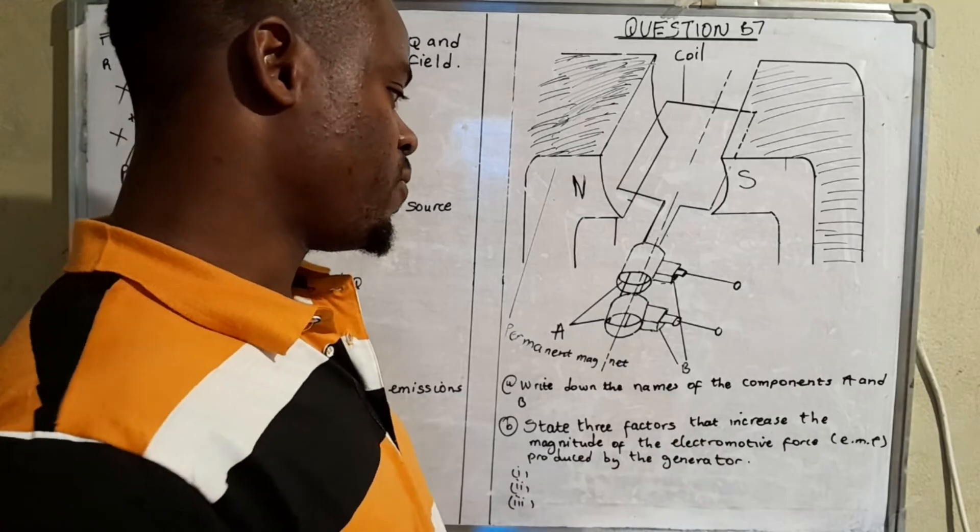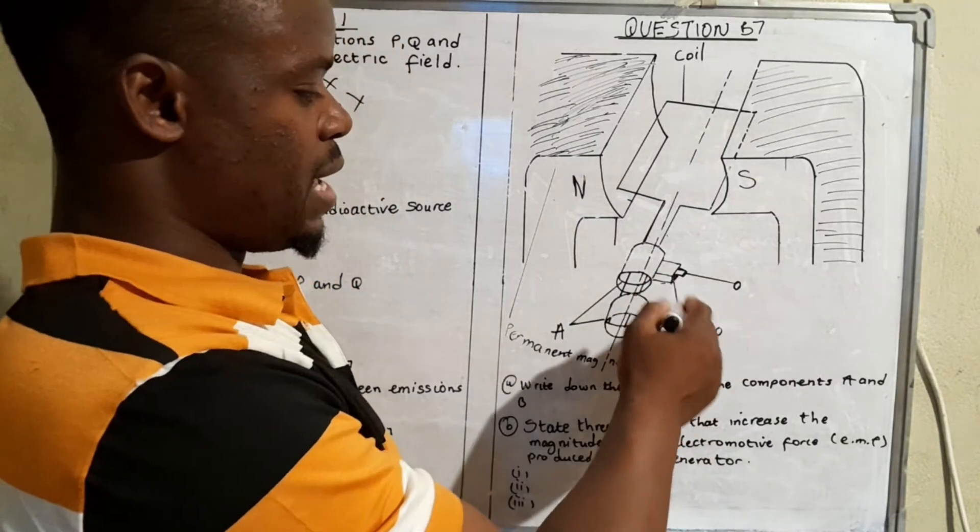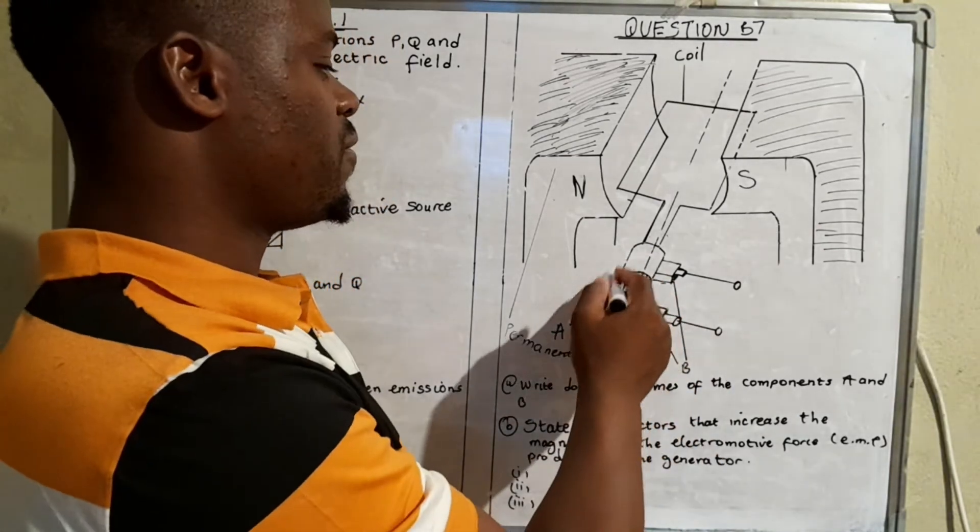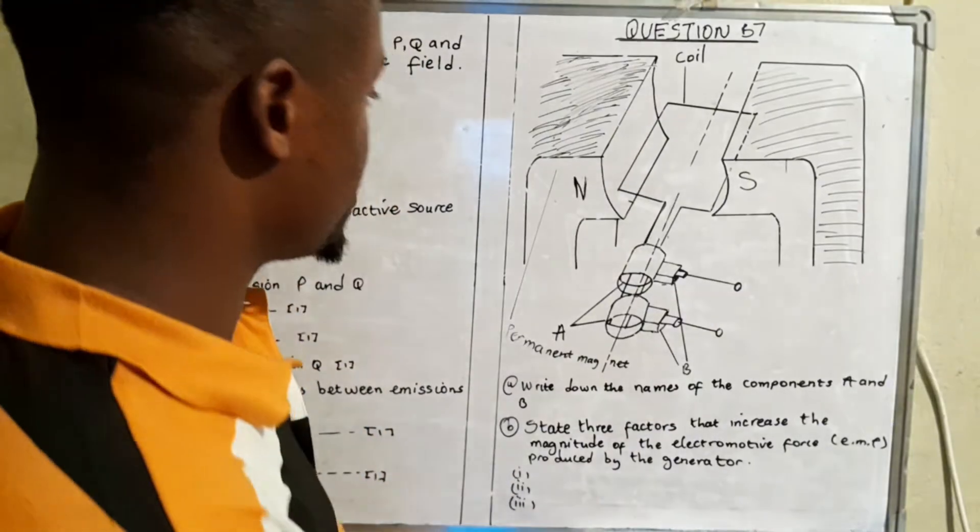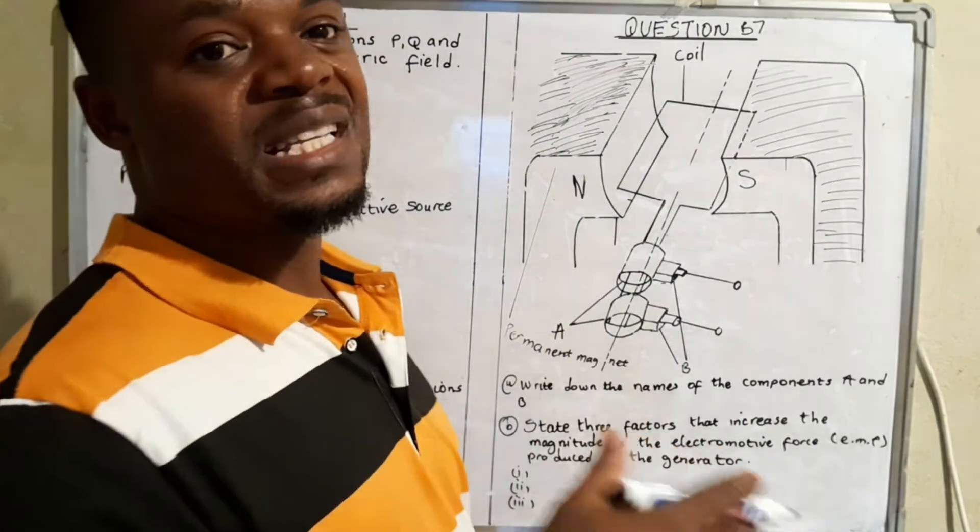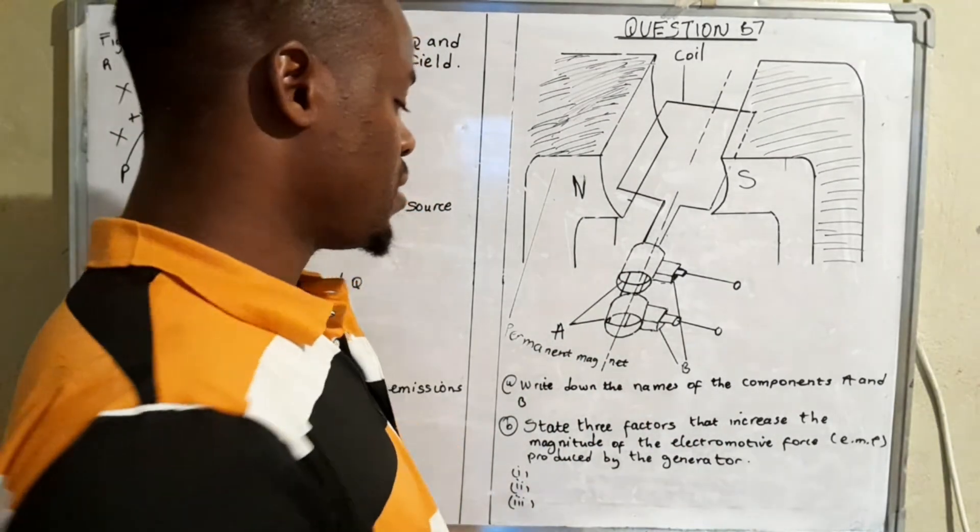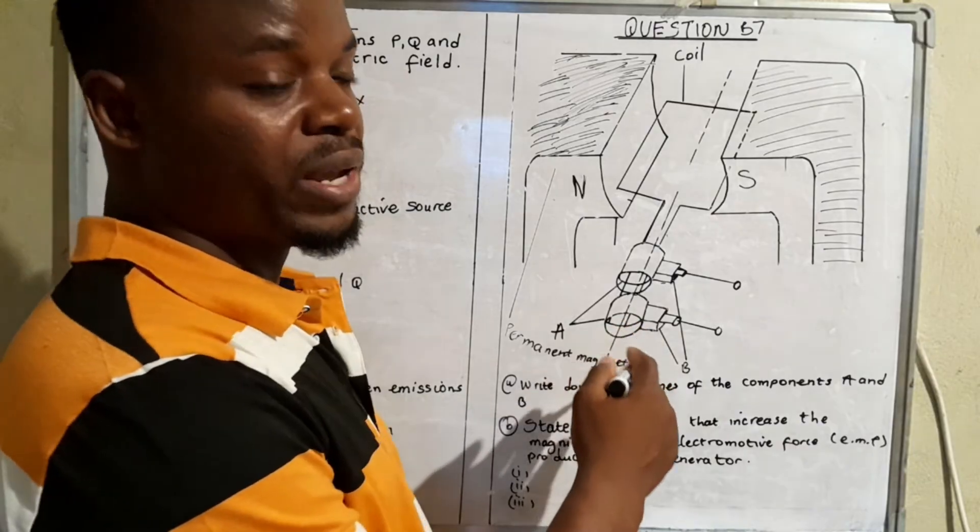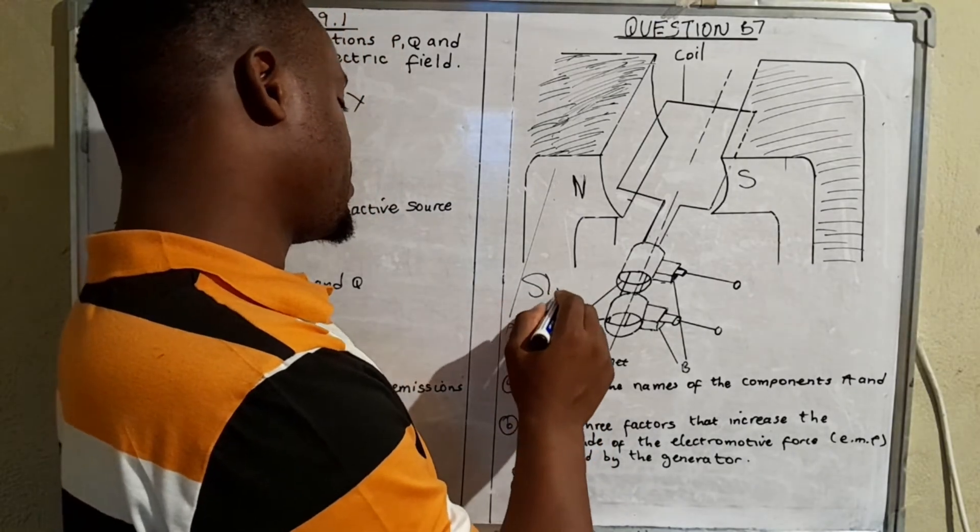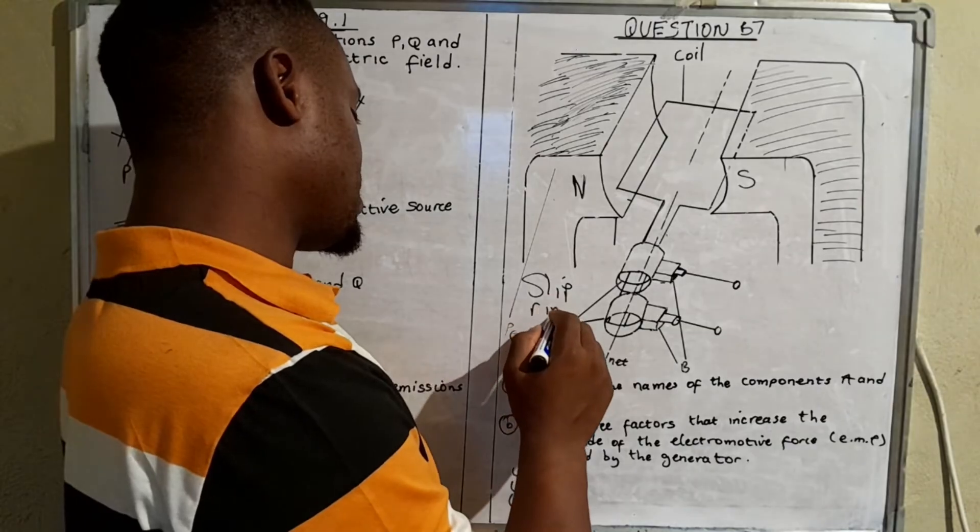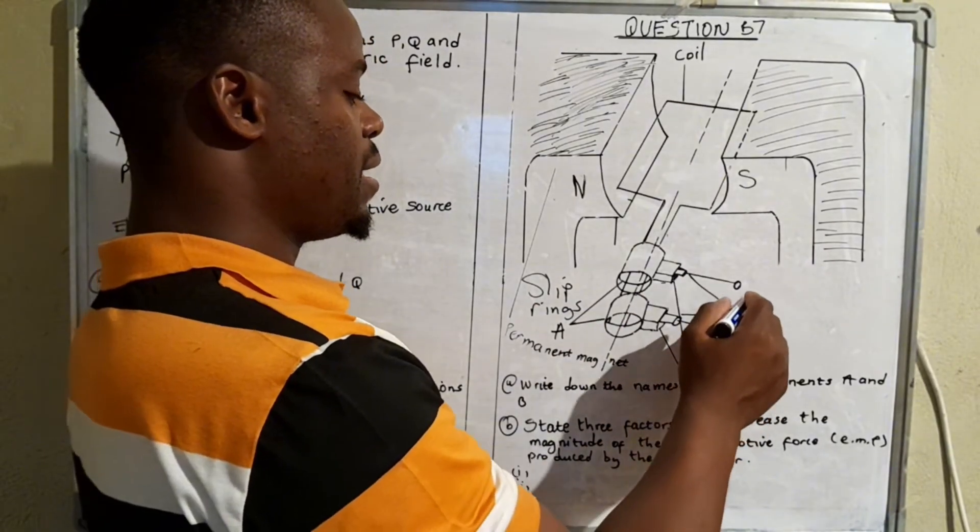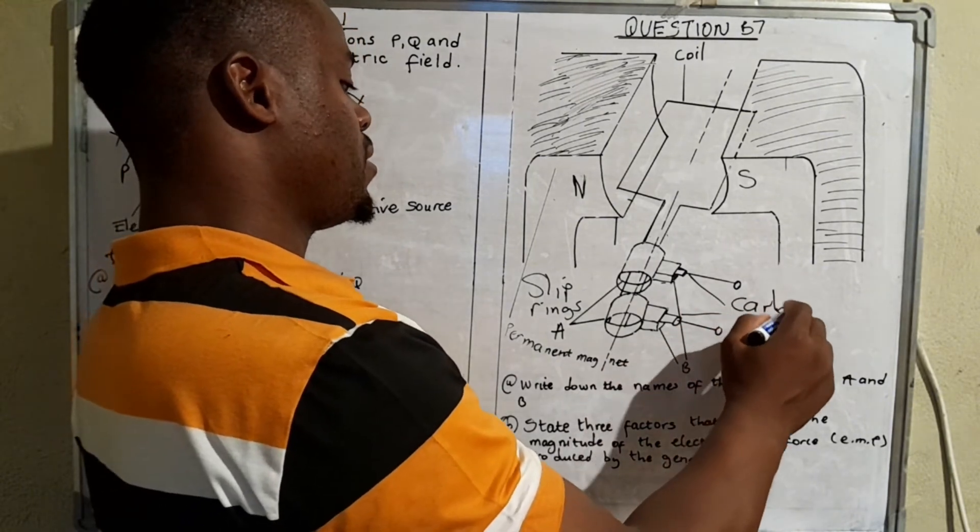They're saying write down the names of the components A and B. The components they're talking of are these rings. Depending on the kind of generator you're looking at, you will either have split rings or slip rings. These are slip rings because they have no splits. Then these, named as B, are carbon brushes.